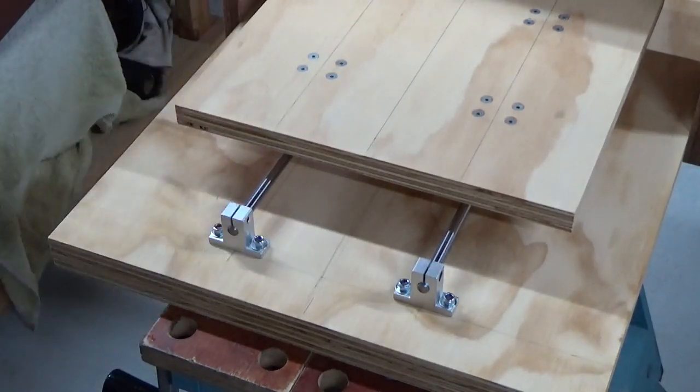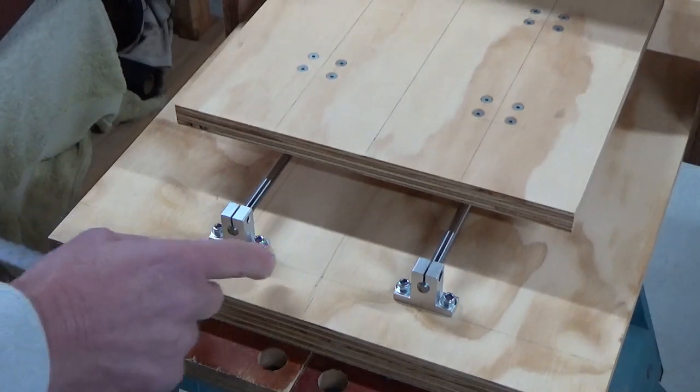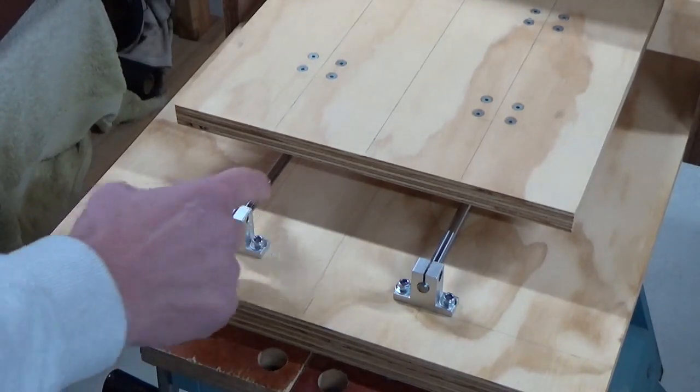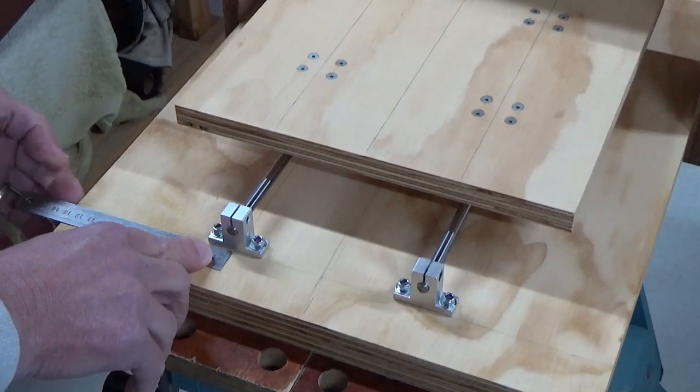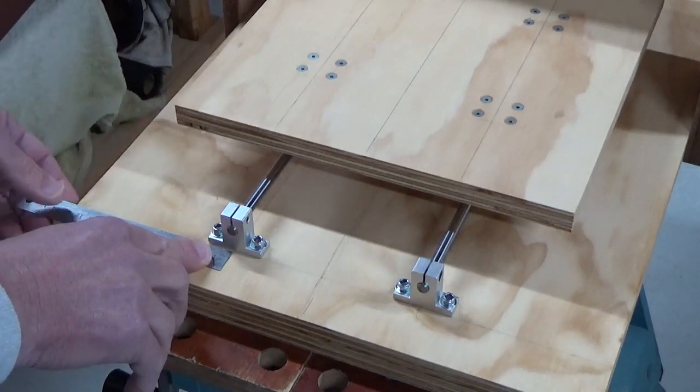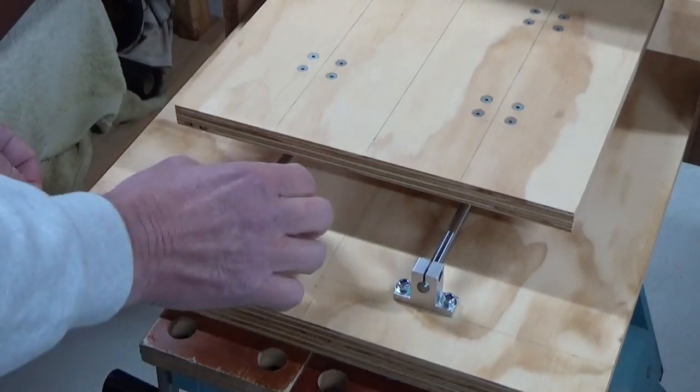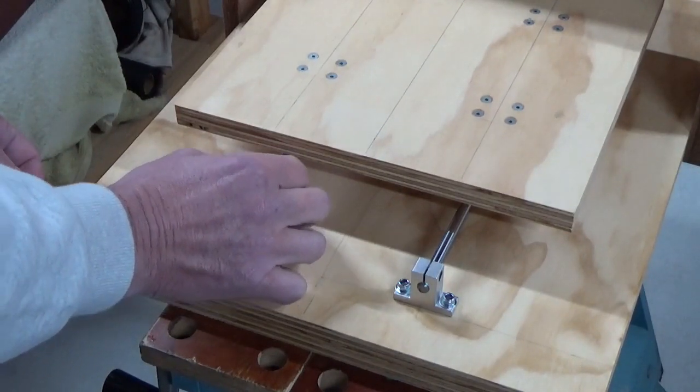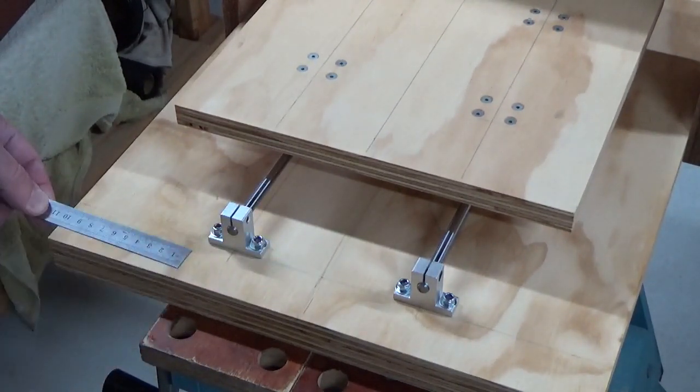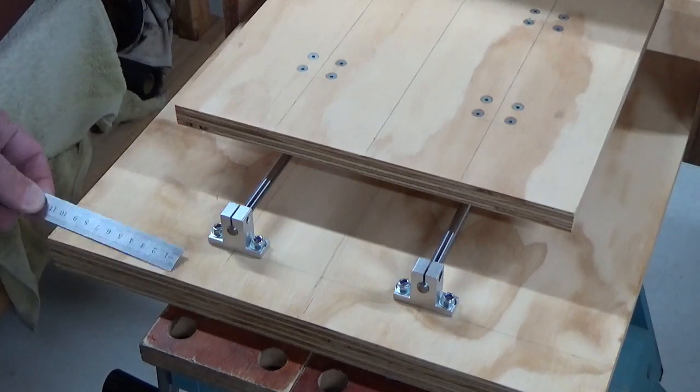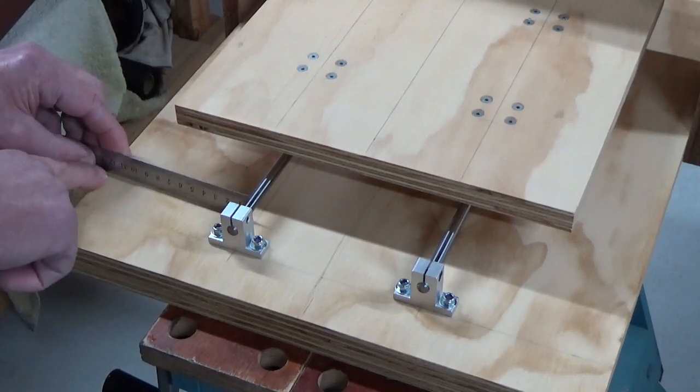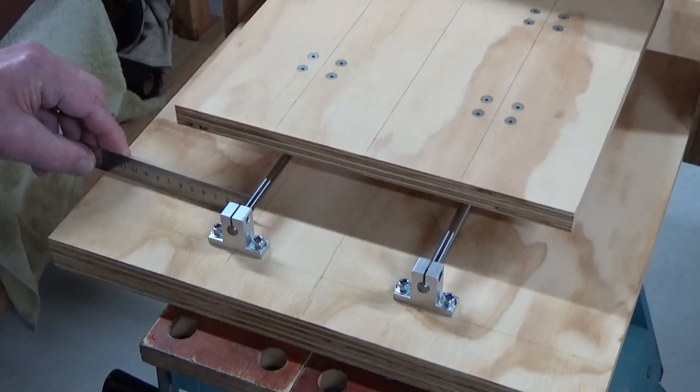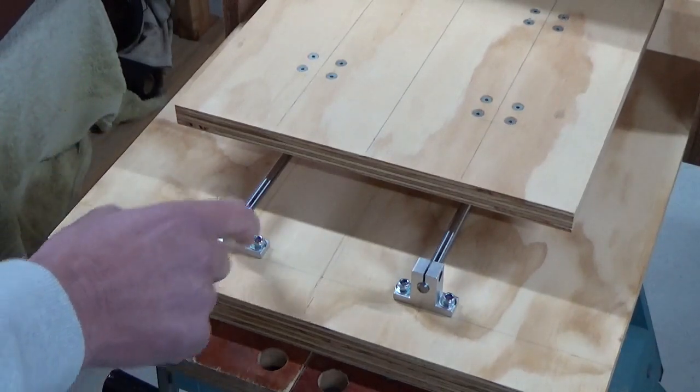We left all that on there in case we ever have to pull this apart and then we can re-measure it up again. For the linear bearing system supports we've got a center line for that and we've got a measurement from the edge of the baseboard. Now because we know that the linear rail systems are eight millimeters in diameter, all you have to do is divide that eight by two, that gives you four, and we deduct four millimeters off to the edge of the baseboard and that puts us over the center line of the block supports.